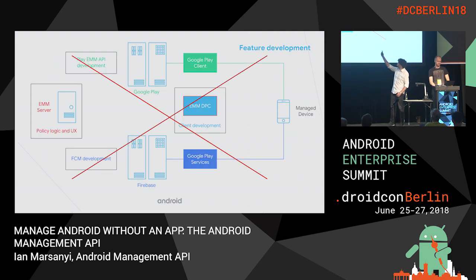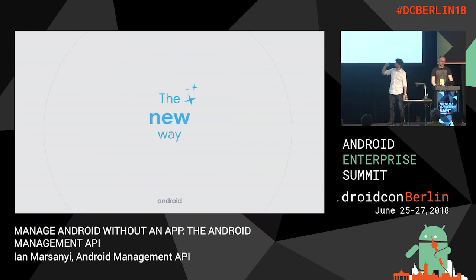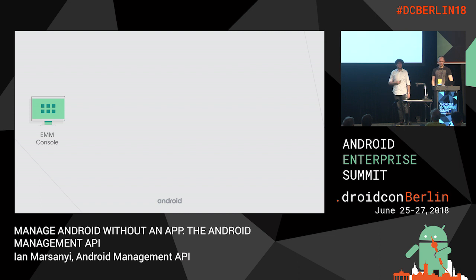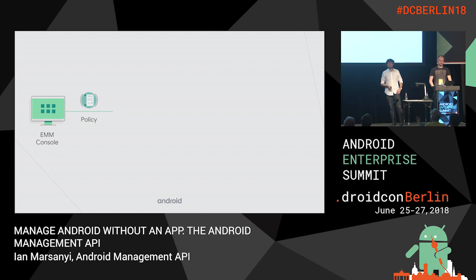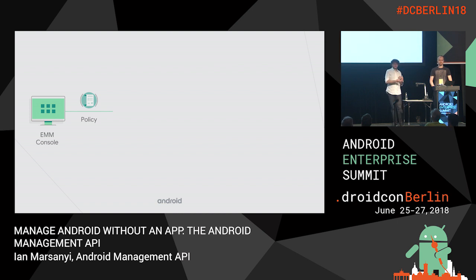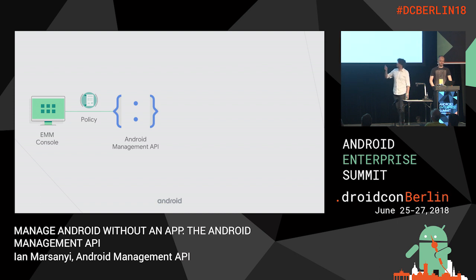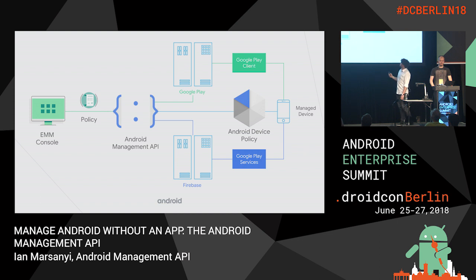That's at least four different places where you have to tie everything together — it's really quite complicated. So we introduced a new API. It's effectively an abstraction layer on top of all of that. You start with your EMM console, or your management web page — whatever construct you have for surfacing features to your administrators. You assign some policy, and instead of knobs and levers built into the Android framework, we've implemented a policy structure that turns somewhat incoherent APIs into meaningful, easy-to-read policies. Then you send it to our API, and we do all the rest. Nice and easy.